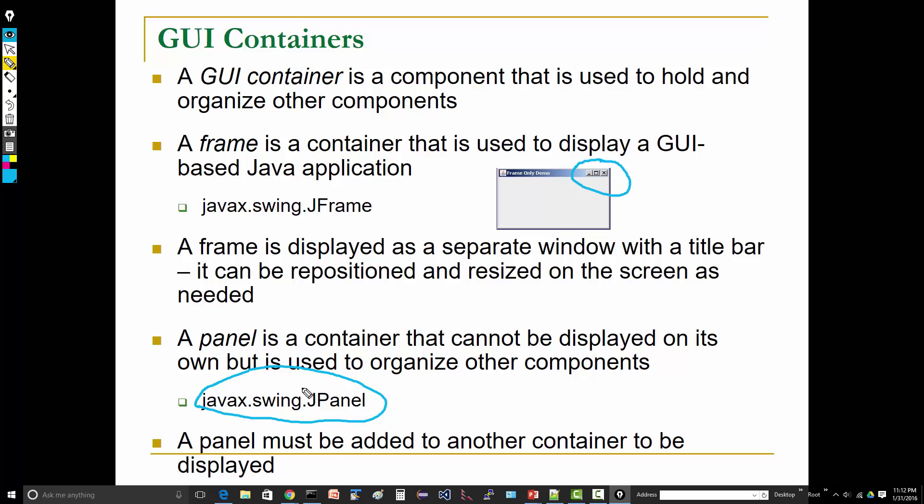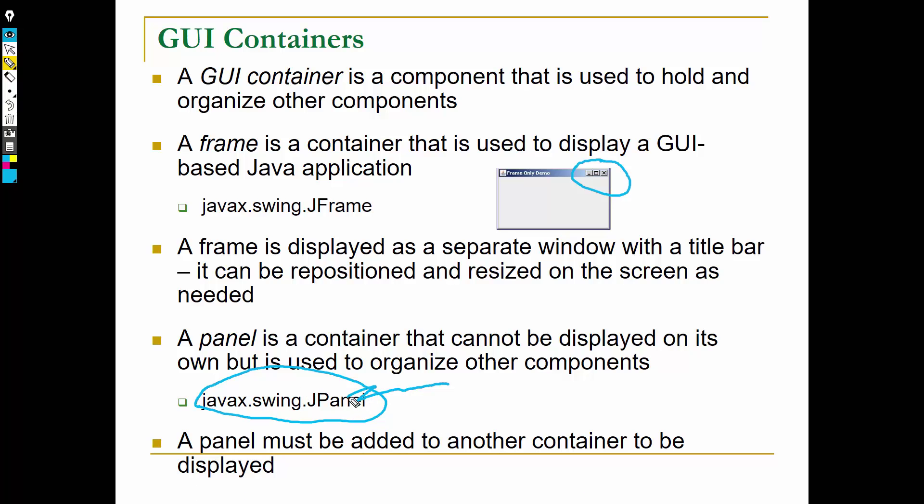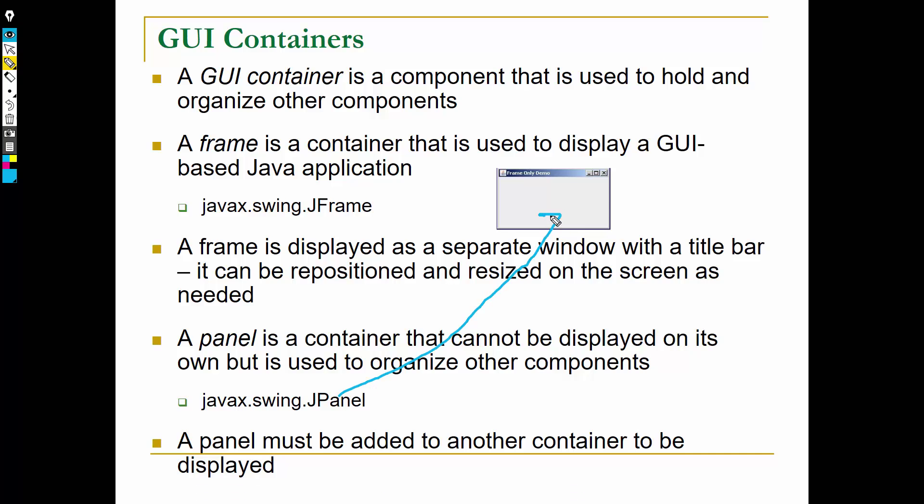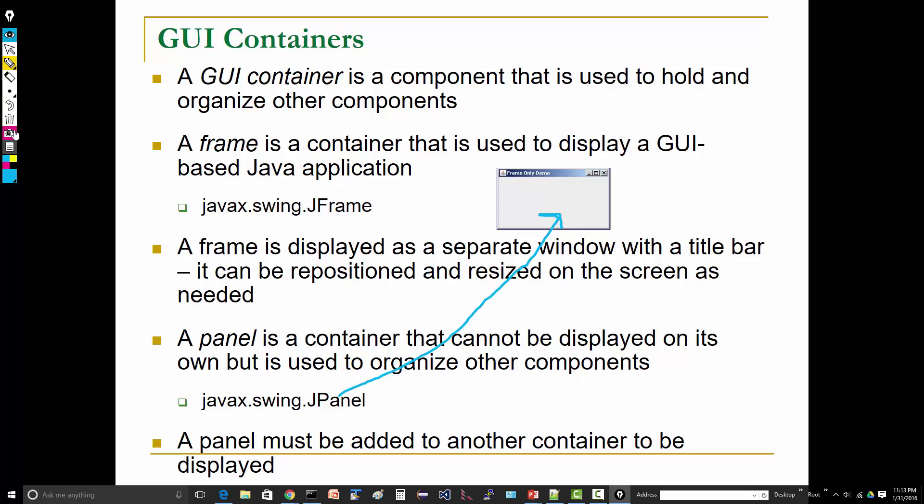So for example, if you had a panel, you might put some components into the panel. You place your components into the panel, then you take the whole panel and put it into the frame. So that's how that works. A panel must be added to another container to be displayed, and specifically it must be added to a top-level container.